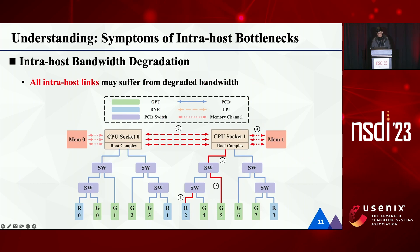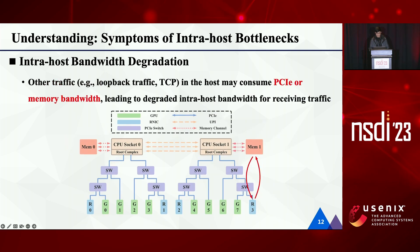Before introducing the design of HostPing, we present our findings for intra-host network bottlenecks. Based on our experience, the symptoms of intra-host network bottlenecks could be broadly divided into intra-host bandwidth degradation and intra-host latency increase. First, the intra-host bandwidth will degrade when some links in the host network fail. Based on our experience, all intra-host links shown in the figure may degrade. Besides, other traffic in the host may consume PCIe or memory bandwidth, leading to degraded intra-host bandwidth for receiving traffic.